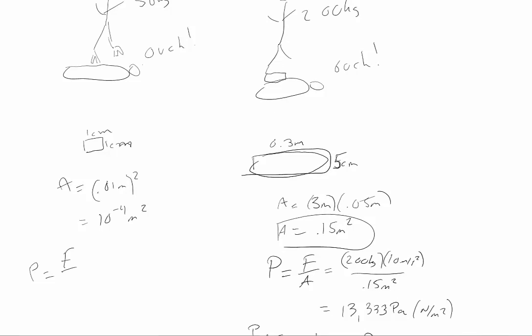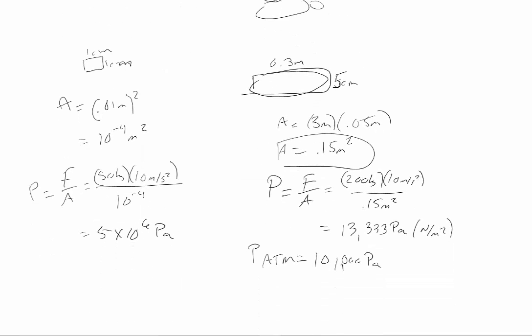And we look at the pressure they're providing. The force is 50 kilograms times 10 meters per second squared times gravity, divided by 10 to the minus 4. We go ahead and work that out. And that's 5 times 10 to the 6th Pascals, or 5 million Pascals. So, it's 5 million Pascals compared to 13,000 Pascals.